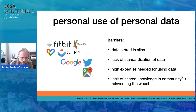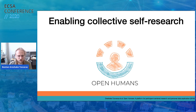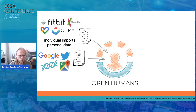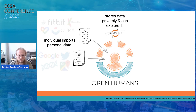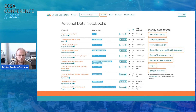We try to minimize these barriers in Open Humans and enable collective self-research on our own data. Open Humans is an open source web ecosystem — basically a data aggregator — which allows individuals to import data from all different sources into a private storage space. You have your own data stored privately, and then you can start as an individual to explore this data to learn about it yourself. We run our own Jupyter Hub setup, another open source software tool for writing data analysis notebooks, so that people can make their own data analyses.